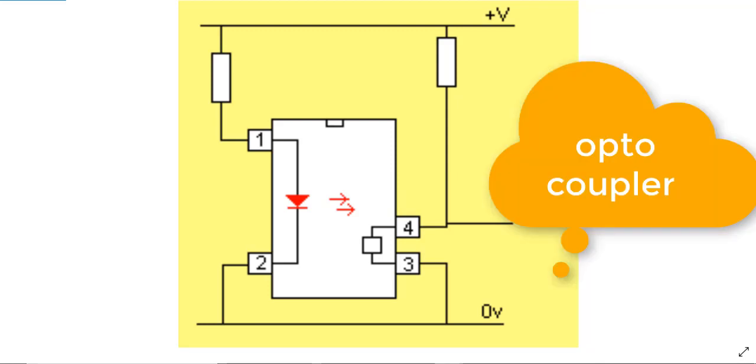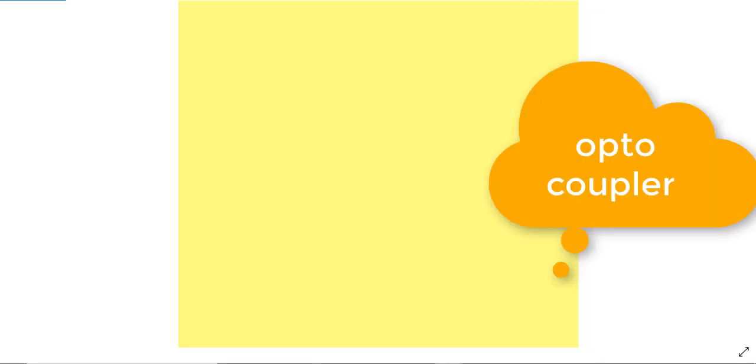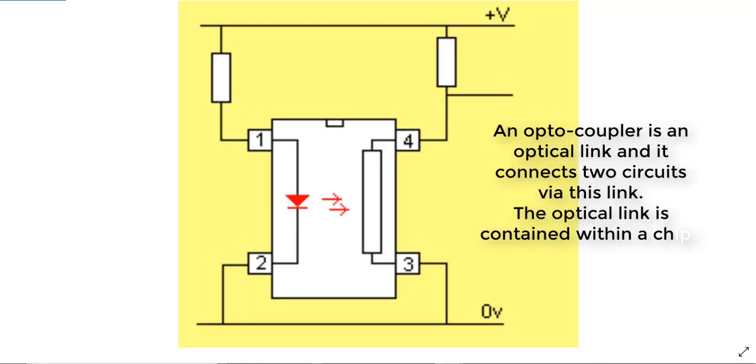What is optocoupler? An optocoupler is an optical link and it connects two circuits via this link. The optical link is contained within a chip.